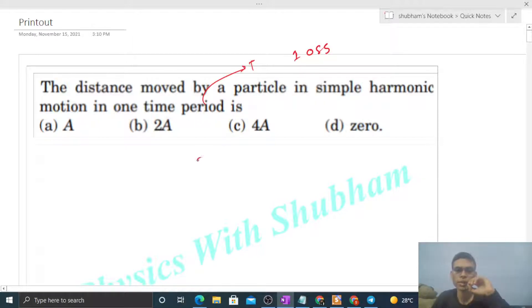So this is how our particle is, and it oscillates. Then you see, this is the mean position, and this is extreme position one, and this is extreme position two. Now in one time period...